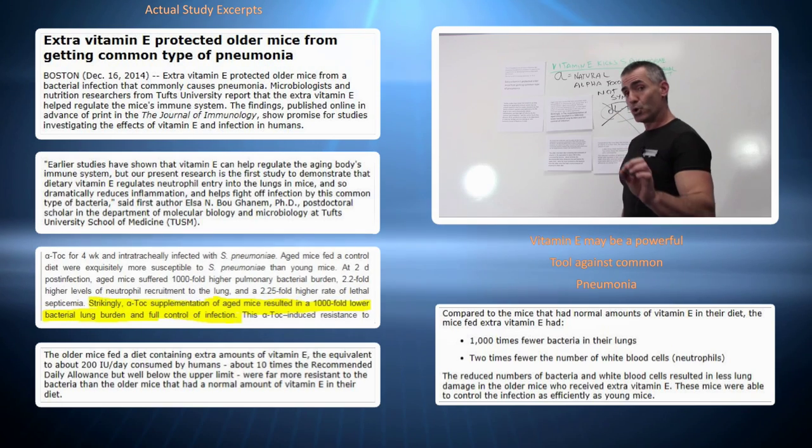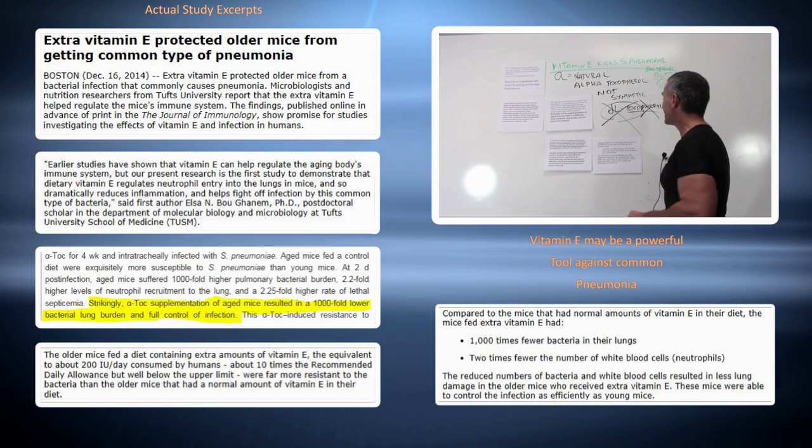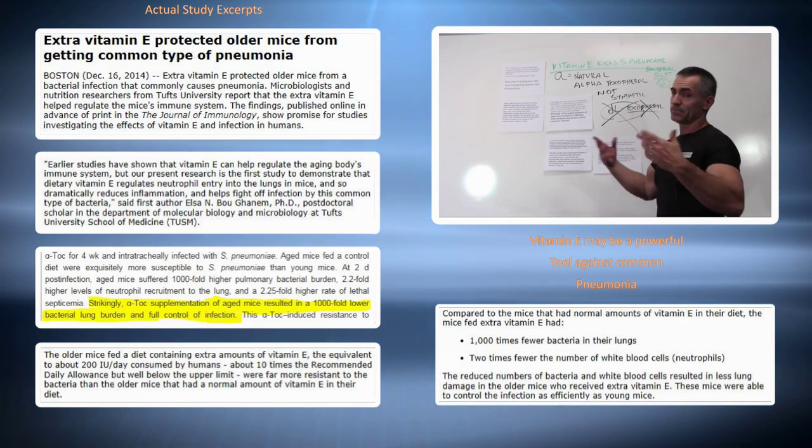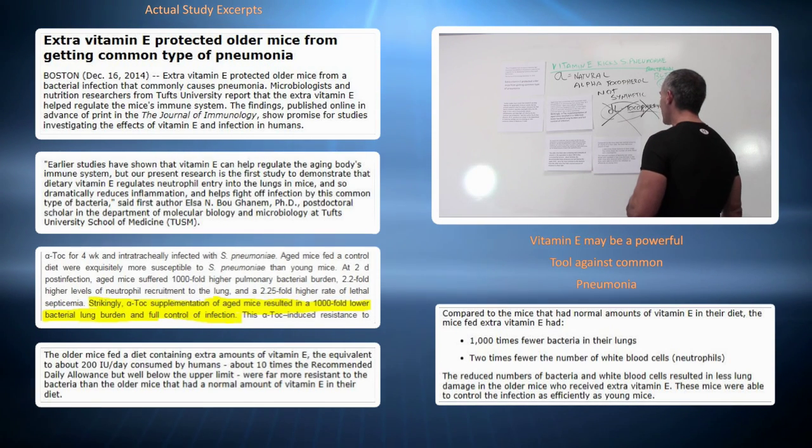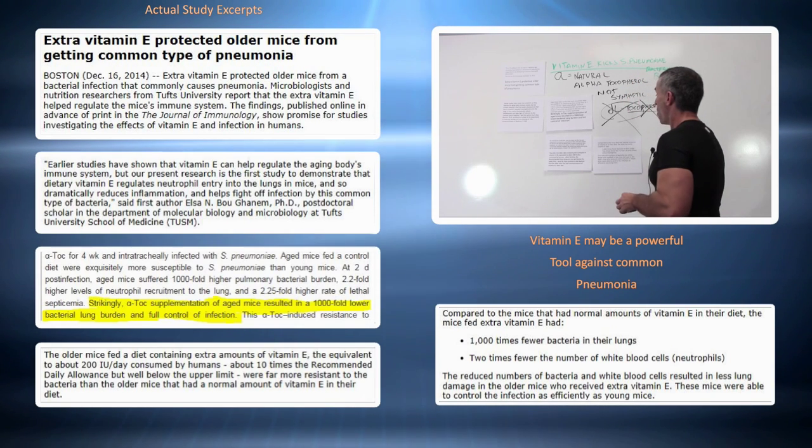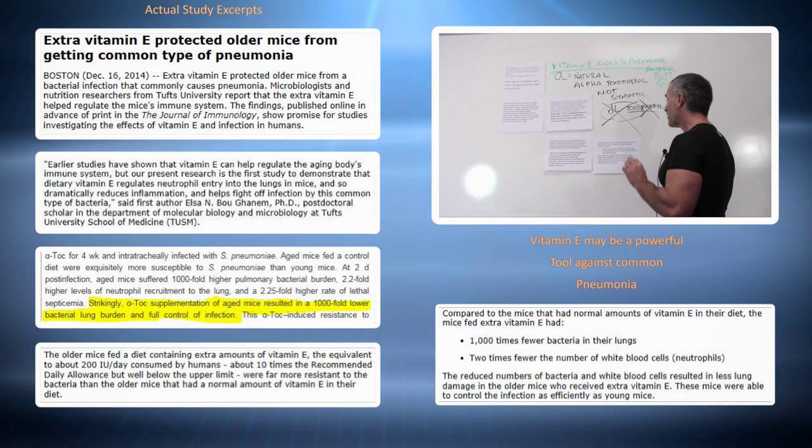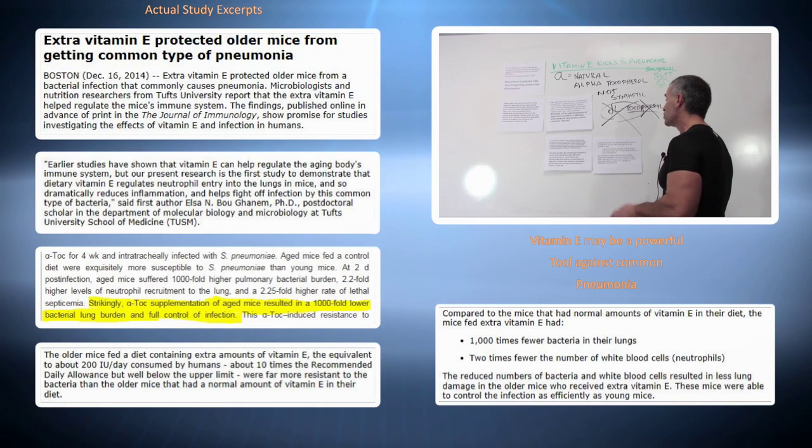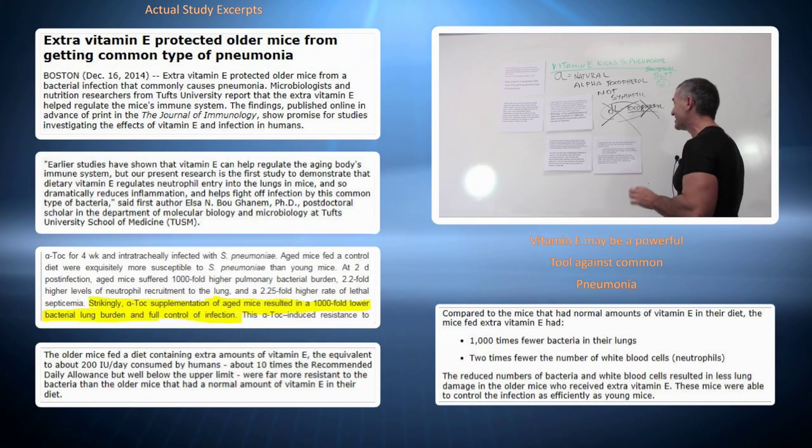And to reiterate and conclude: compared to the mice that had normal amounts of vitamin E, typical RDA in their diet, the mice fed extra vitamin E, 200 IUs, had 1,000 times fewer bacteria in the lungs and two times fewer white blood cell neutrophils.